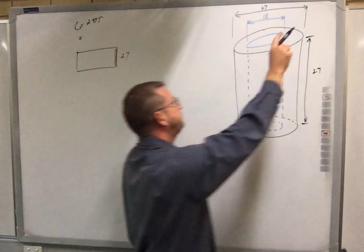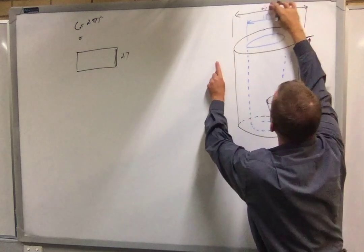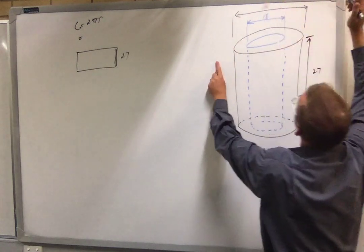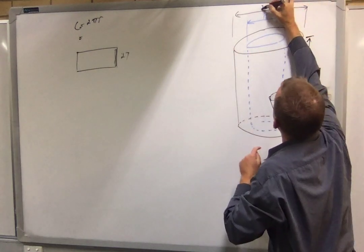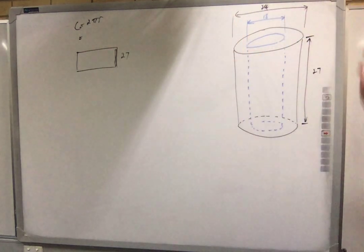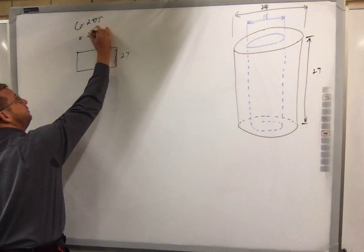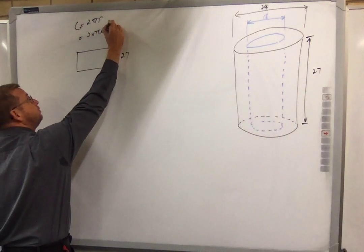Now this is the outer side. Oh that's not 27, it's 24. If that's 24, what's the radius of the black circle? 12. So this length is 2 times pi times 12.